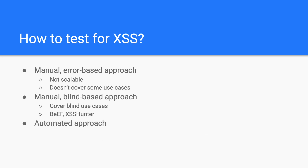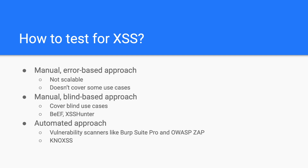Finally, you have the automated approach, where automated scanners come into play. For example, if you use Burp Suite Pro or OWASP ZAP — we demonstrated in the SQL injection hands-on tutorial how you can use both of them to target specific vulnerabilities. Besides, there is a rising tool currently in beta, NOG XSS, which specializes in finding reflected and DOM XSS.